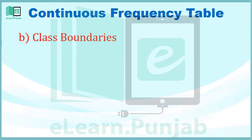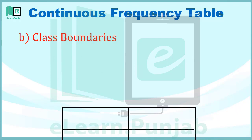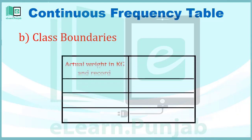आईए, अब हम Weight का Table बना लेते हैं। Table के पहले Column में हम Actual Weight और Record को Kilogram में लिखेंगे और दूसरे Column में हم Approximate Weight लिखेंगे।